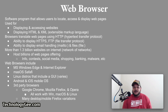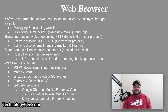A web browser is a software program that allows users to locate, access, and display web pages. Browsers are used primarily for displaying and accessing websites on the Internet, as well as other content created using languages such as Hypertext Markup Language (HTML) and Extensible Markup Language (XML). Browsers translate web pages delivered through HTTP into human-readable content, and also have the ability to display other protocols such as HTTPS, FTP (file transfer protocol), email handling, and files. There are more than 1.3 billion websites on the Internet — the network of networks — hosting billions of web pages offering information, social media connections, shopping, banking, and, unfortunately, malware.